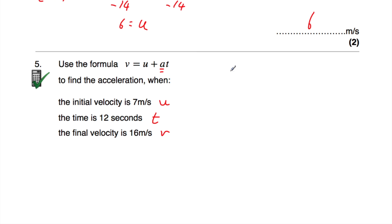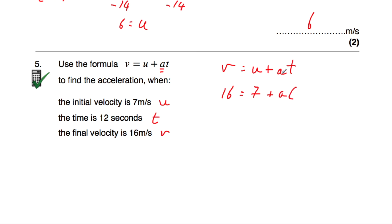So let's substitute these values in. v equals u plus at: 16 is equal to 7, plus the acceleration — which we're trying to find — so it's a multiplied by t, and the time is 12. So we've got 16 equals 7 plus a multiplied by 12. a times 12 will be 12a. So that's 16 equals 7 plus 12a.